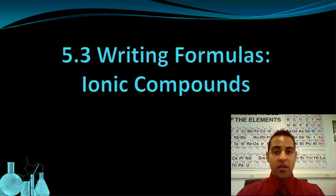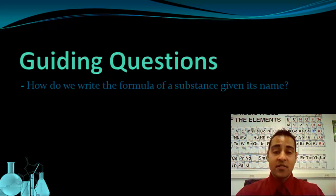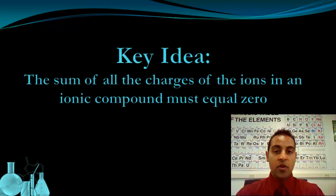Welcome to Writing Formulas for Ionic Compounds. In this lesson, we're going to find out how to write a formula for an ionic compound given the name. Before we get too far into that, we're going to want to look at this key idea. The key idea for this lesson is that the sum of all charges of the ions in an ionic compound must equal zero. So the ions that make up an ionic compound, when we add up all of their charges, it has to come out neutral. They have to equal zero. This idea is going to be our basis for how we write formulas.